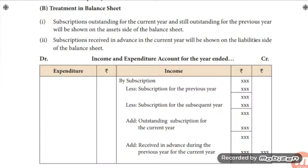The format of the income and expenditure account is given here. Subscription received is an income — it should be shown on the credit side. Show the amount of subscription received in the inner column. Then, less subscription for the previous year: if there is any subscription of the previous year included, we should deduct that. Again, less subscription for the subsequent year: if there is any subscription of the subsequent year, that also will be deducted.